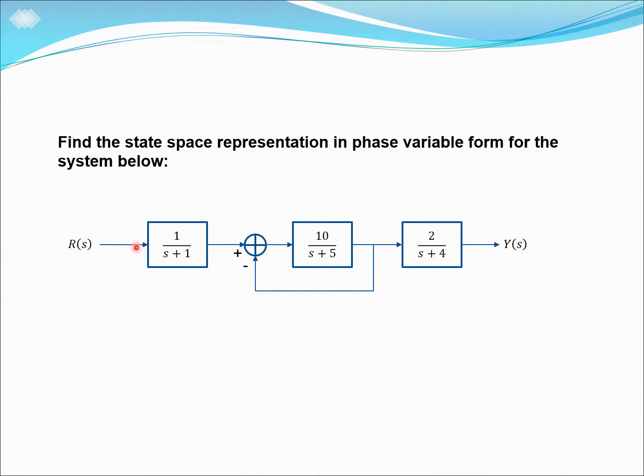So this is a first-order subsystem. This is also a first-order subsystem, and this is also a first-order subsystem. But we can see that if combined, all these subsystems, we will get a third-order system. So keep in mind that we need to have three state variables.